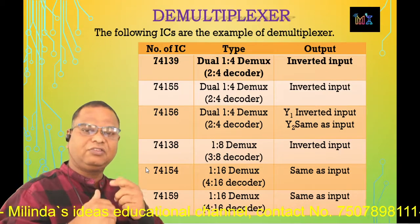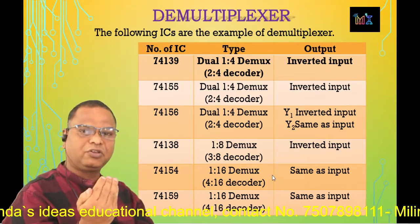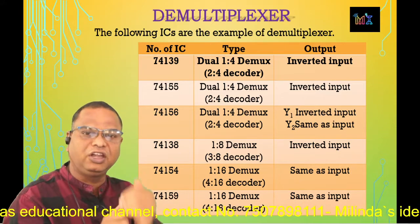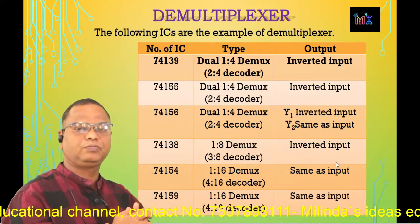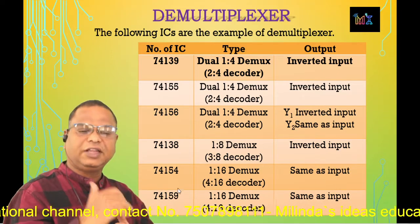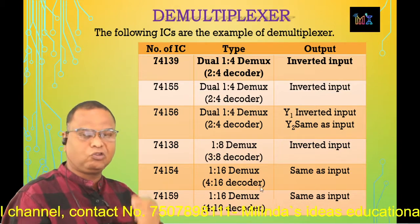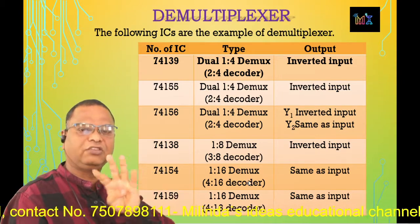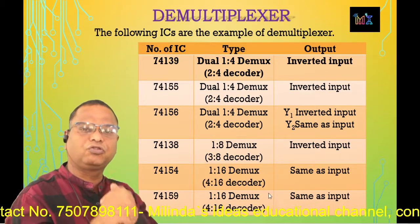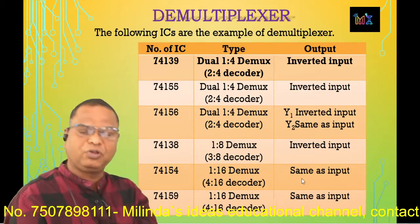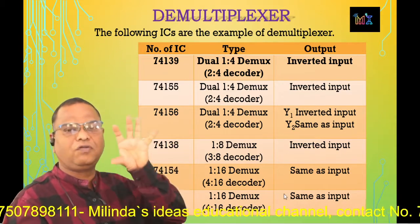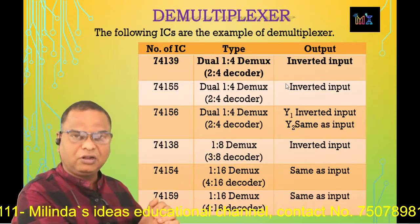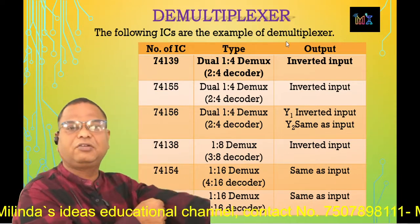IC 74154 is a 1-to-16 demux. Since there are 16 outputs, there should be 4 control lines, so this IC is also known as a 4-to-16 decoder. The next IC, IC 74159, is also a 1-to-16 demux with 16 outputs and 4 select lines, so it is also known as a 4-to-16 decoder. That completes the table of ICs used as demultiplexers in logic systems.